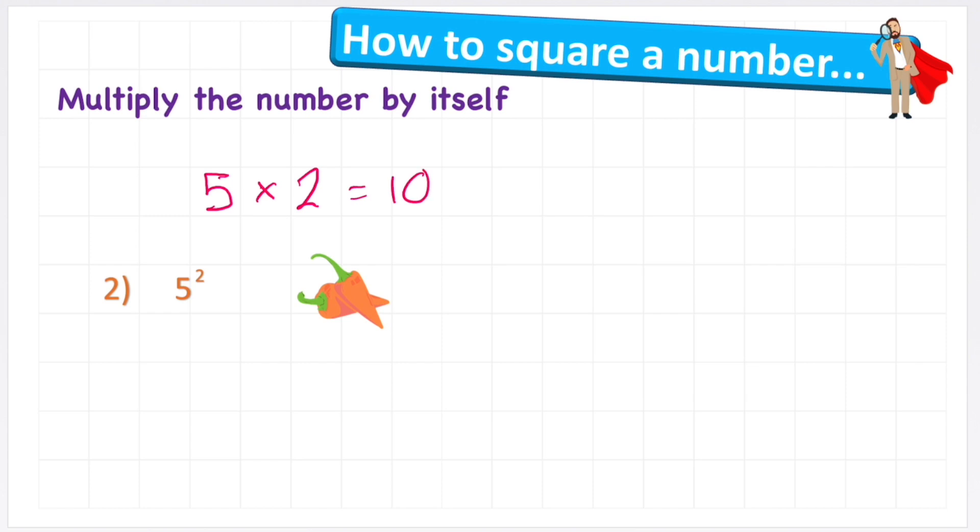So my number sentence should actually read 5 multiplied by 5. 5 times 5 is 25. Let's prove it again by building my square.